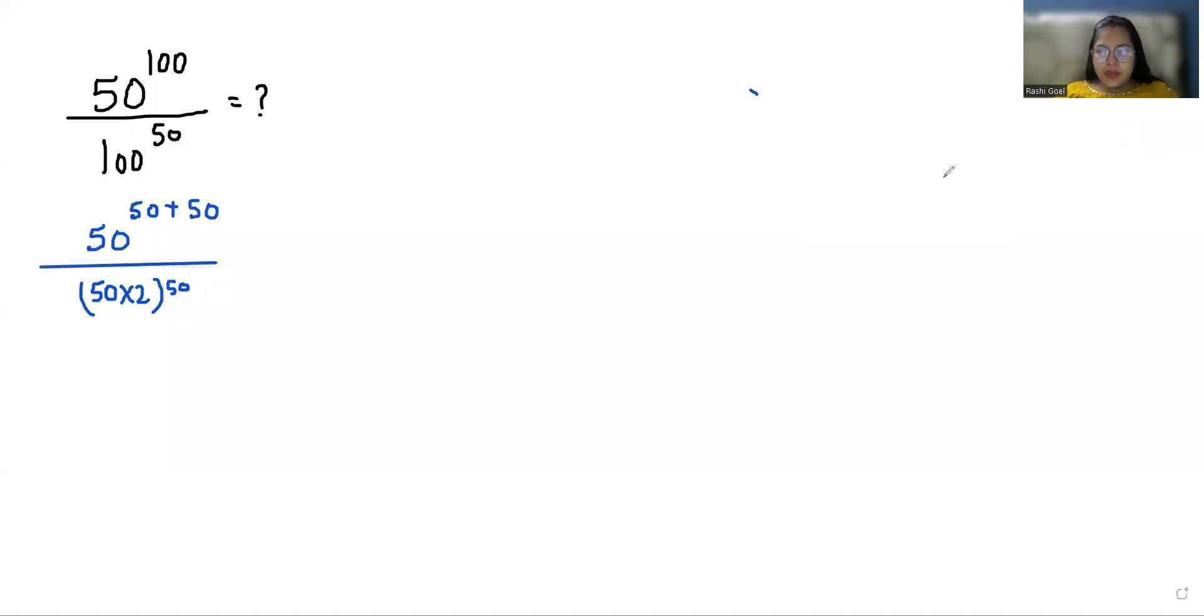Now exponent rule: x^(m+n) we can write it as x^m × x^n. And another exponent rule: (x × y)^m equals x^m × y^m.